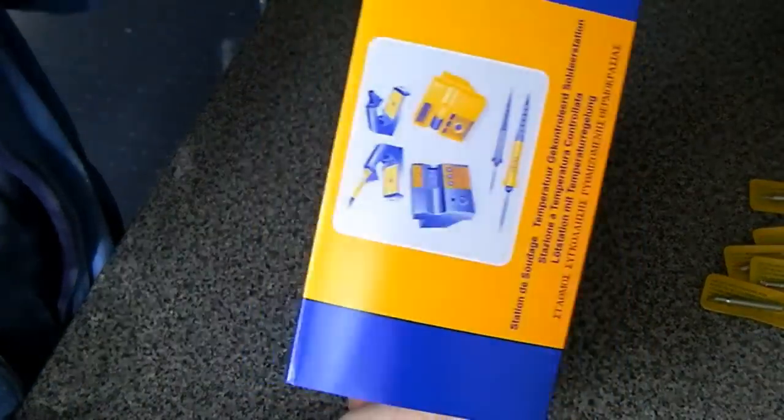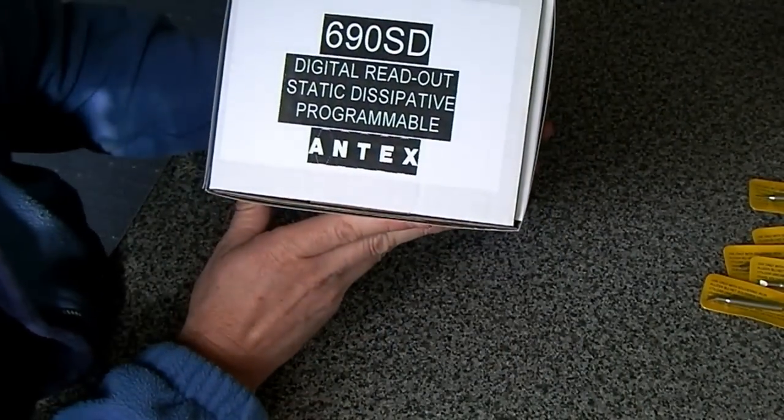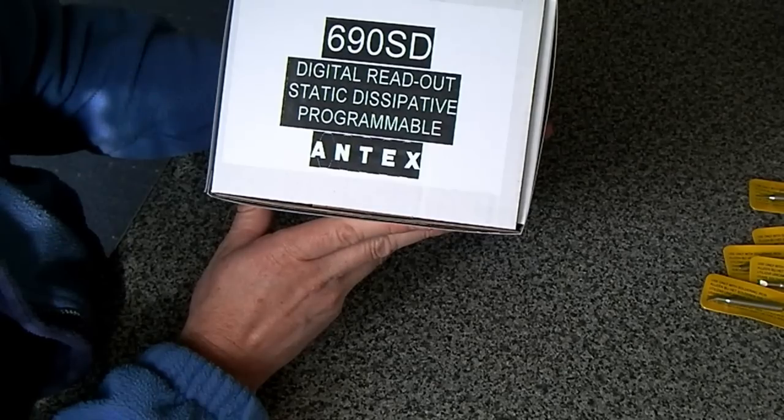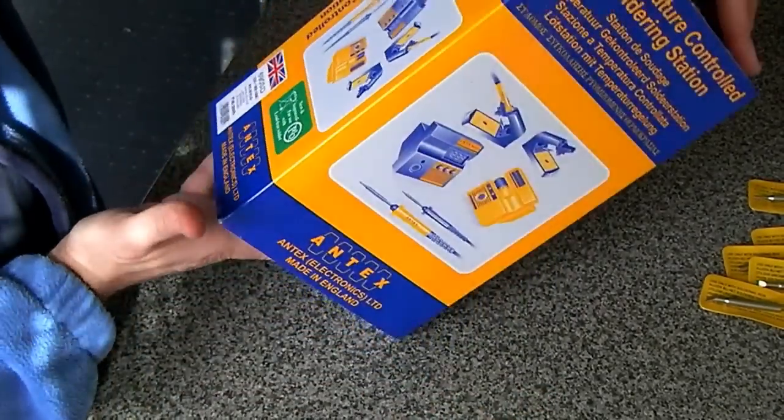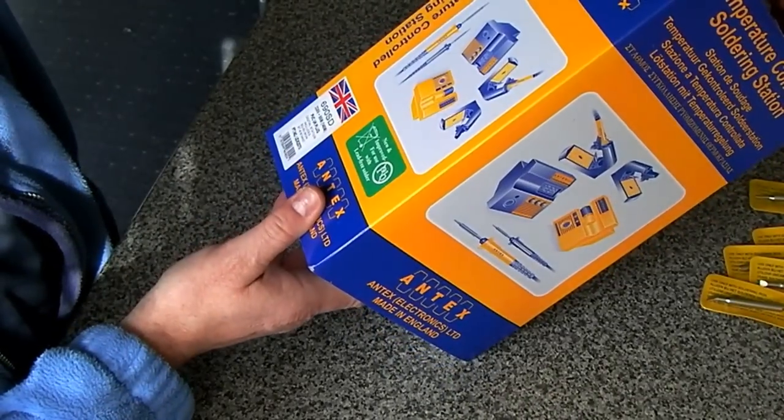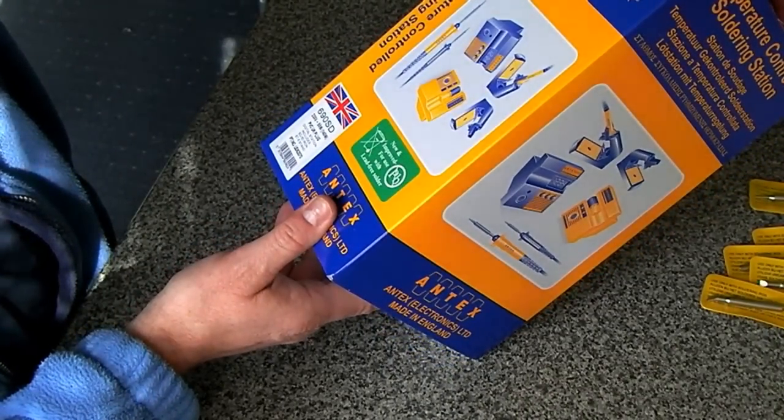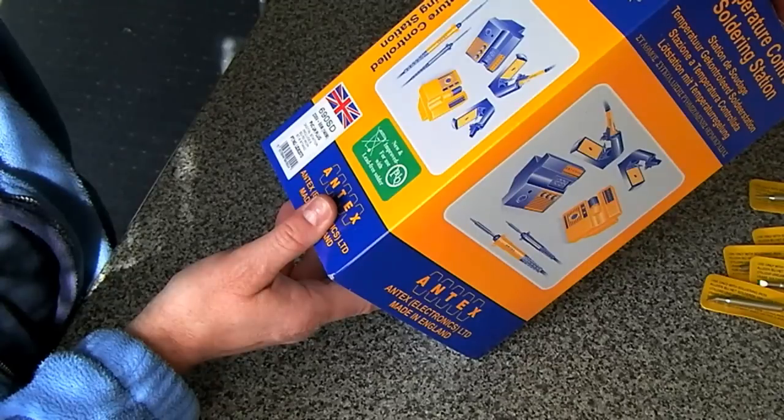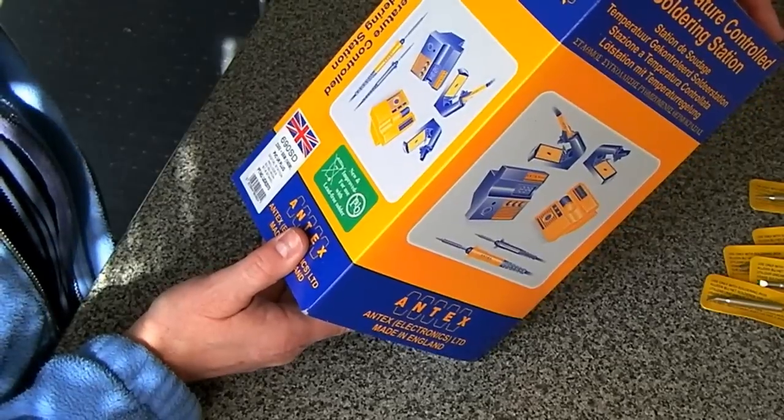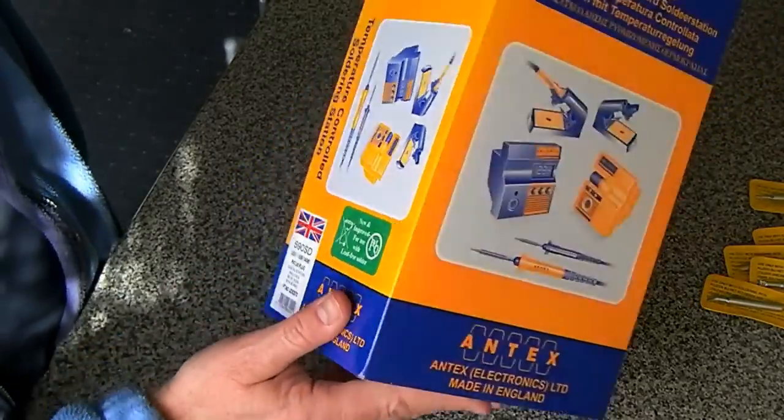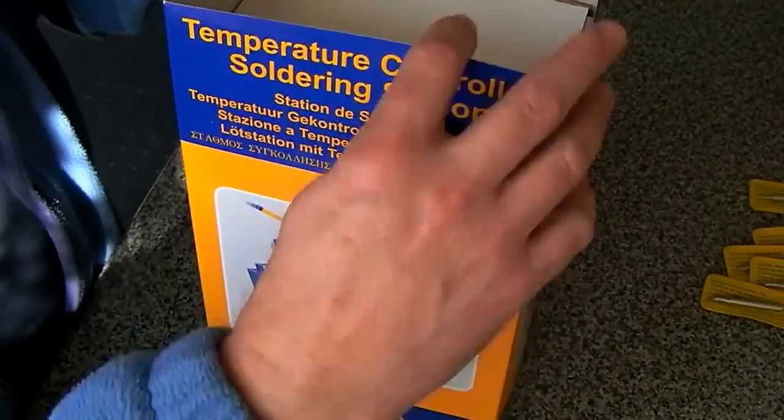Now this is a 690 SD with digital readout, programmable. 230 volts, 55 watts, the SD50 iron and the ST6 stand which I think is probably the same as the stand on the 660 that we had a look at a week or two ago.